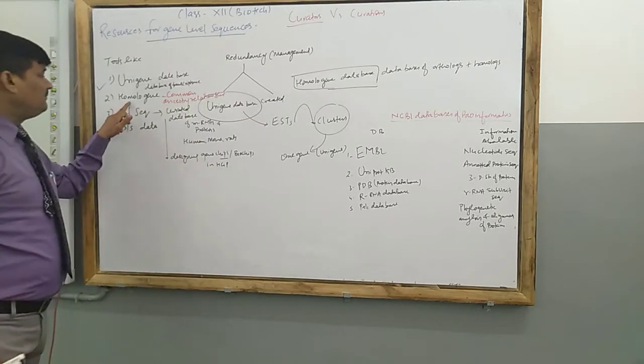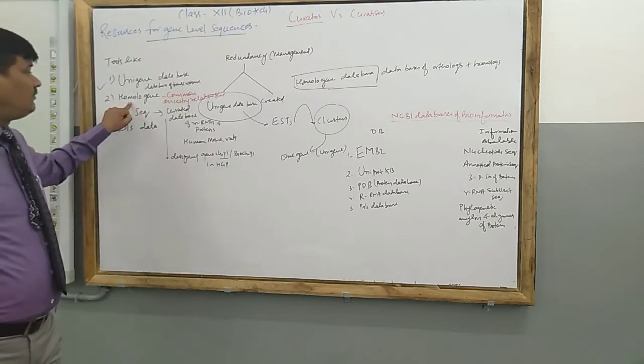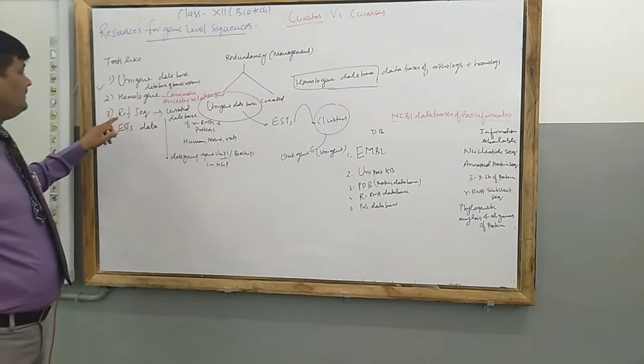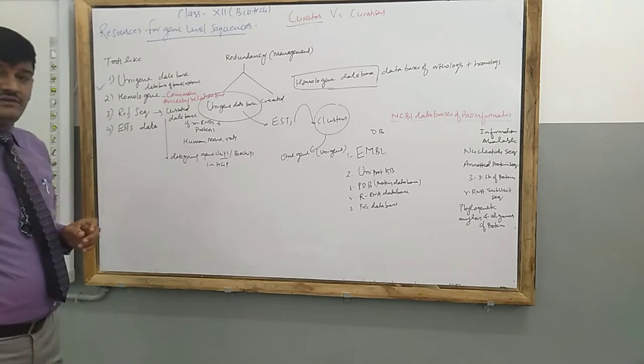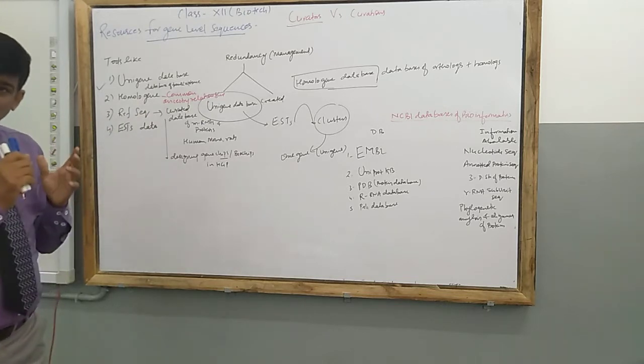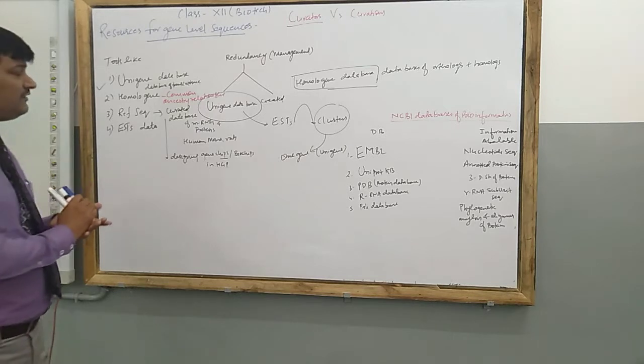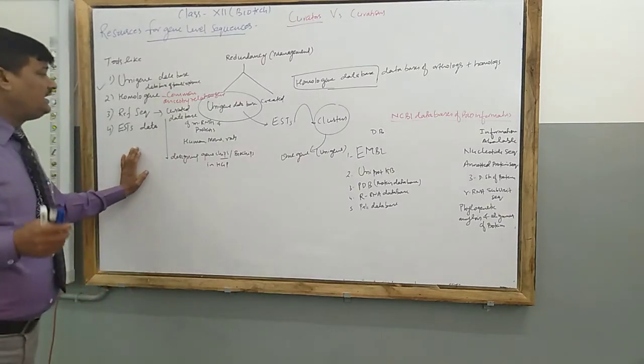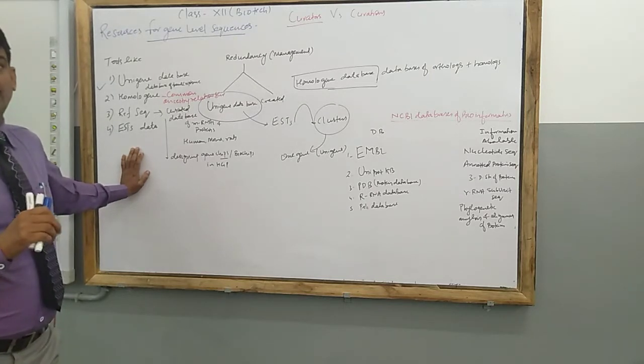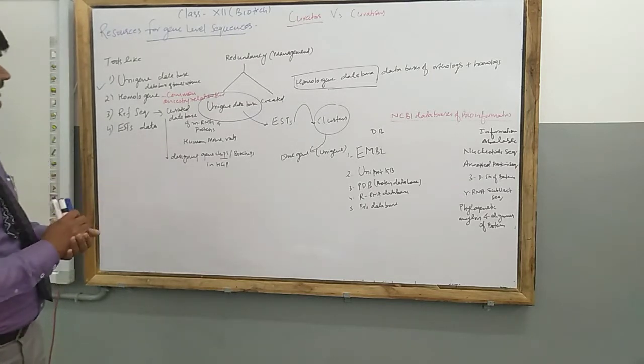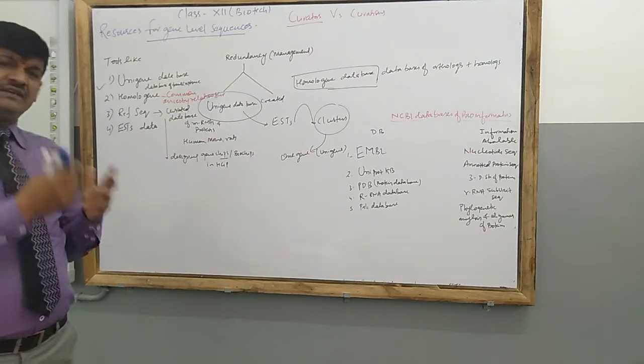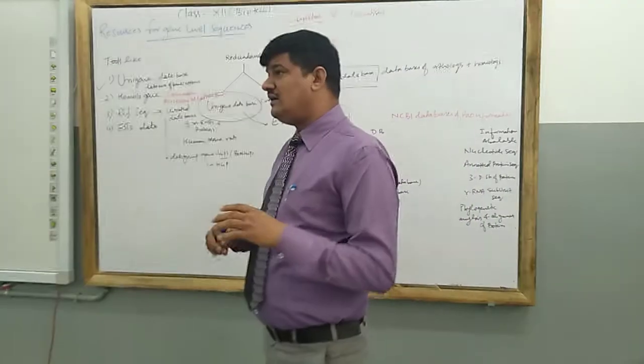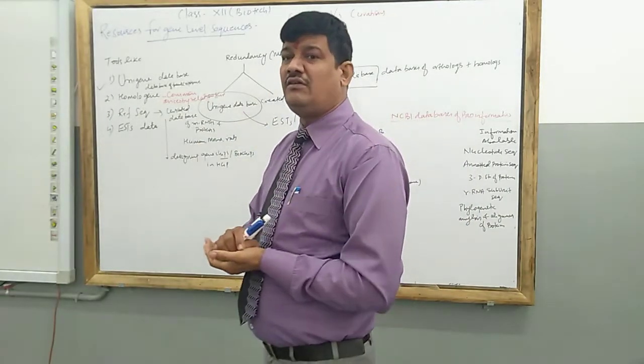Third one is the reference sequences. These reference sequences are also a tool, a bioinformatic tool as recommended by NCBI, and it is the curated database of mRNA and protein which is basically used in the Human Genome Project. It is also used in the study of the genome of rats or mice.